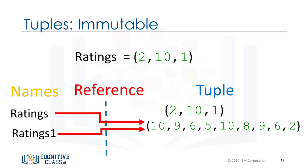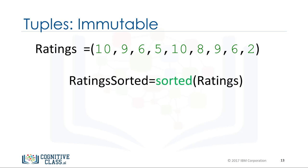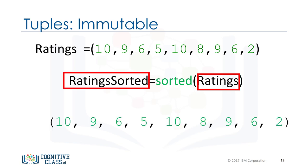We can assign a different tuple to the ratings variable, and the variable ratings now references another tuple. As a consequence of immutability, if we would like to manipulate a tuple, we must create a new tuple instead. For example, if we would like to sort a tuple, we use the function sorted. The input is the original tuple and the output is a new sorted tuple.